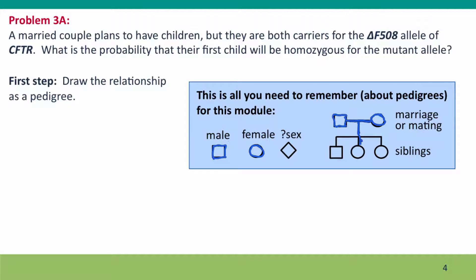If the male and female are mated and going to have children, we connect them by a horizontal line. When they have children, we draw a line down. If there's just one child, we draw the line straight down. If there's more than one child, we put a crossbar across and have children coming down in birth order — first child, second child, third child. If we don't know someone's sex, instead of a square or circle, we draw a diamond.